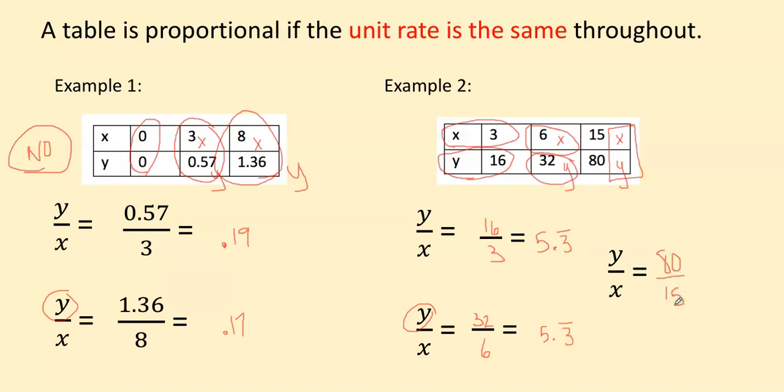So the 80 should go at the top and the 15 at the bottom. And when we divide 80 divided by 15, we get 5.33333333. The 3's go on forever. Since the unit rate was the same throughout the whole table, this table is proportional. So that's a yes.